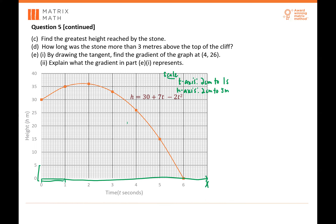For part C, find the greatest height reached by the stone. Looking at the graph, it should be around 36 meters. From 35 to 40 meters is an increment of 5 meters over 10 boxes, so every one box up is 0.5 meters. The peak is about 2 boxes above 35, which gives approximately 36 meters.